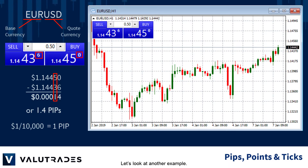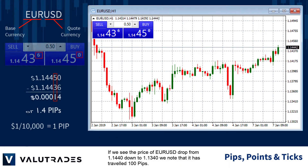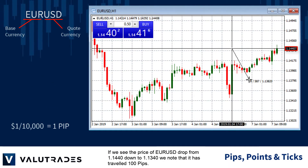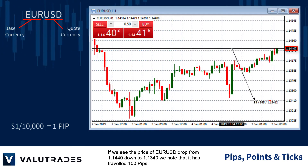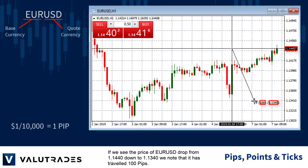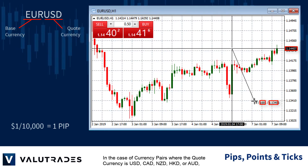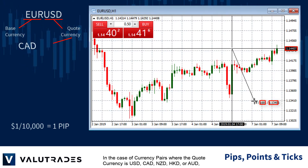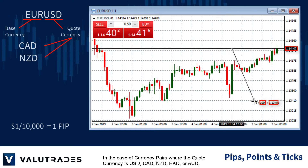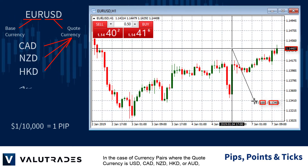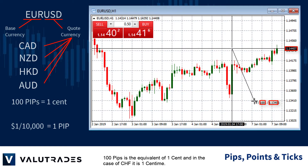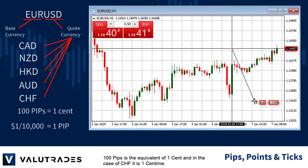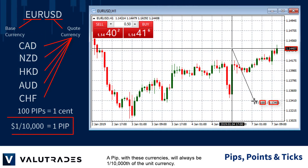Let's look at another example. If we see the price of EURUSD drop from 1.1440 down to 1.1340, we note that it has traveled 100 pips. In the case of currency pairs where the quote currency is US dollar, CAD, New Zealand dollar, Hong Kong dollar, or Australian dollar, 100 pips is the equivalent of 1 cent, and in the case of the Swiss franc it is 1 centime. A pip with these currencies will always be 1 ten-thousandth of the unit currency.